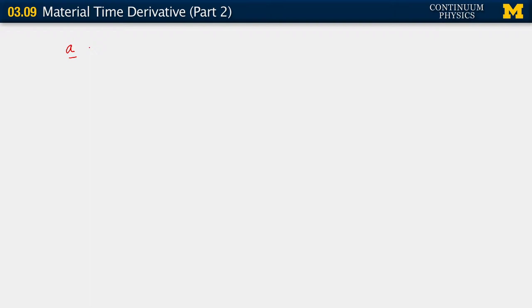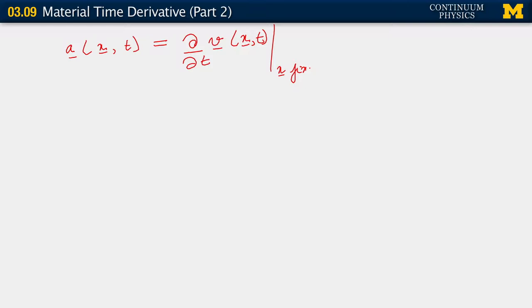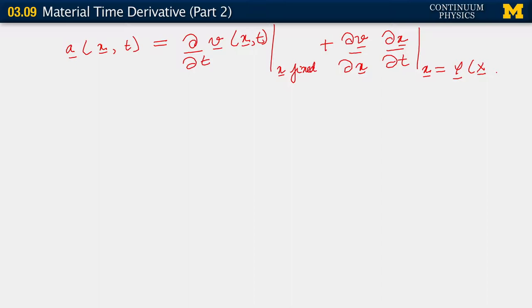Let me reproduce that here. The spatial Eulerian acceleration, as we've seen, is this: x fixed, plus partial of v with respect to little x, little x differentiated with respect to little t. All of this is being done remembering that little x is phi of capital X comma t.